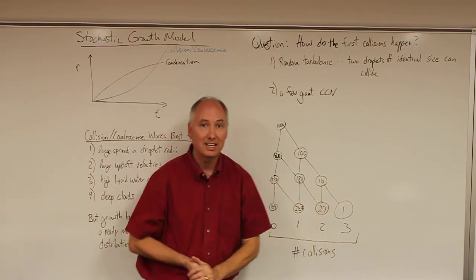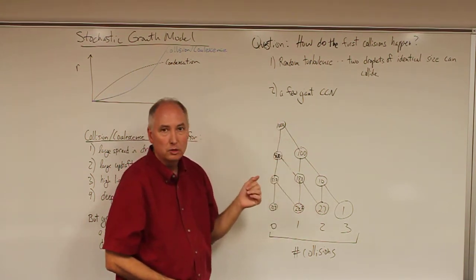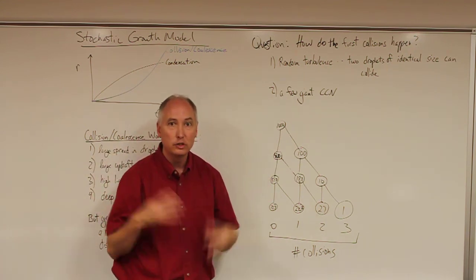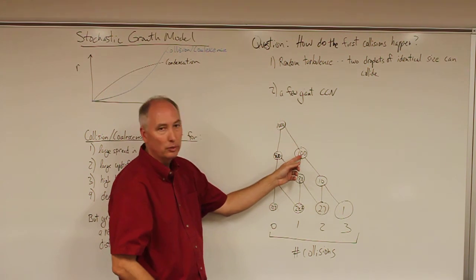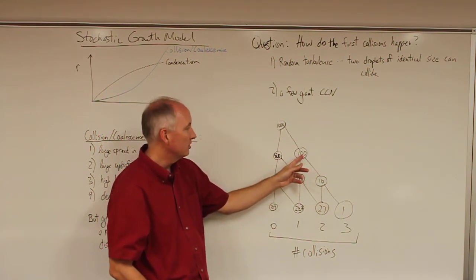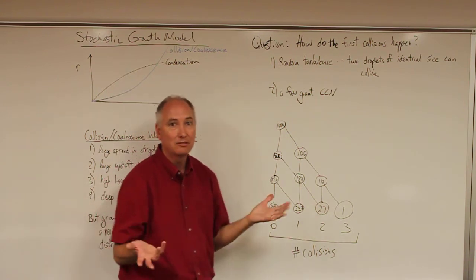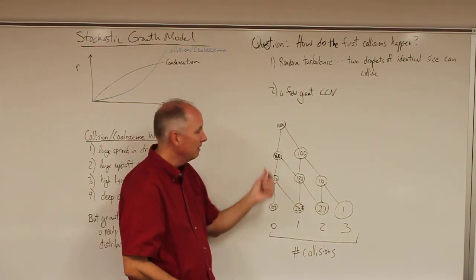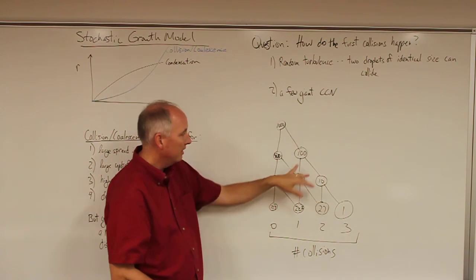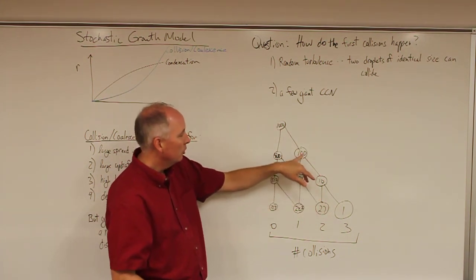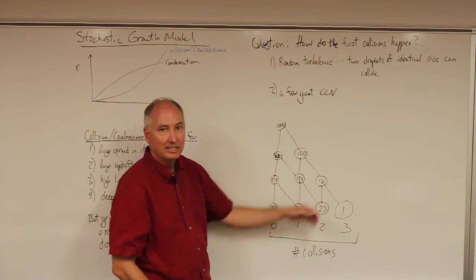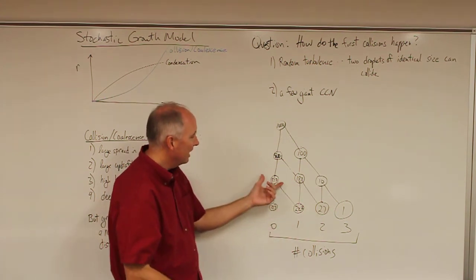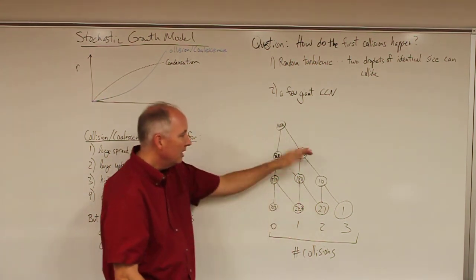In the stochastic model, we assume random processes in the cloud can cause a droplet to grow. Starting with a thousand droplets all exactly the same size, if through random turbulence ten percent actually collide and coalesce, you would have 100 droplets that have collided once and 900 that have not. In the next step, ten percent of the 900 and ten percent of the 100 collide, giving you 10 droplets that have collided twice, 180 that have collided once, and 810 that haven't collided at all.